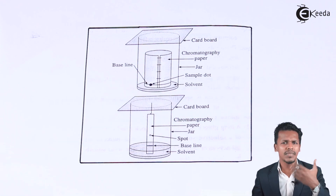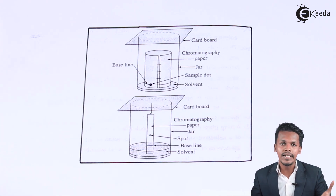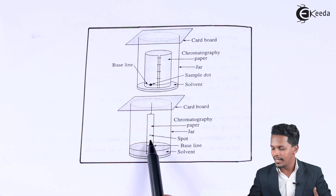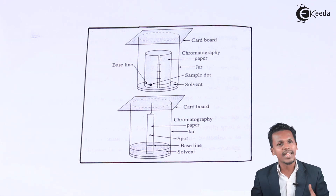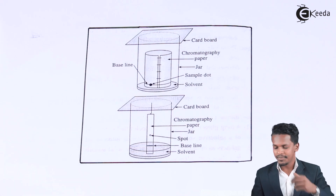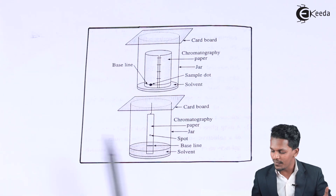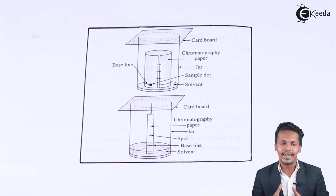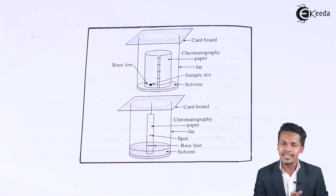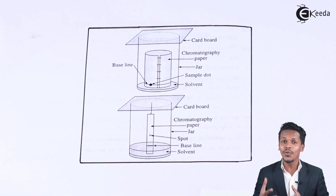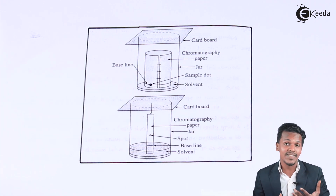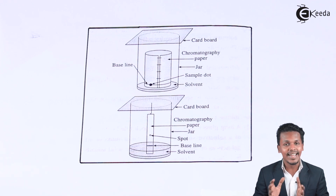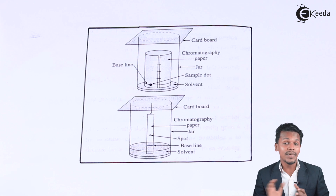We can find two or three spots, depending on how many components are present in the organic mixture — each component is spotted at a different point. Depending on the particular organic compound, we can find different spots on the paper. This is how we can differentiate and separate the organic components present in the mixture, and also analyze which organic compound is present — similar to what we did in thin layer chromatography.